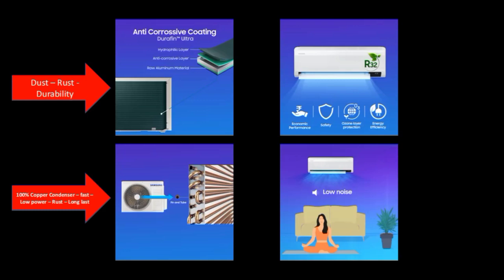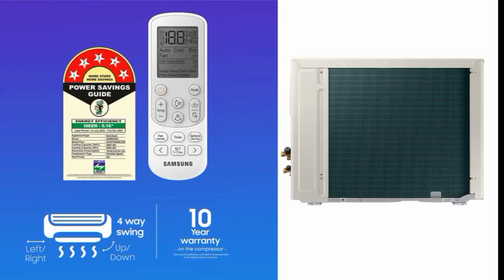The compressor features an anti-corrosion coating, which protects against dust and improves durability. The condenser is 100% copper, which allows faster room cooling and lower power consumption. It is also more durable and easier to maintain. The refrigerant gas used is R32, which is an eco-friendly option. The compressor design also features a green color finish with anti-corrosion coating.